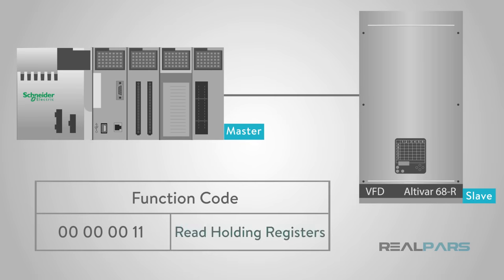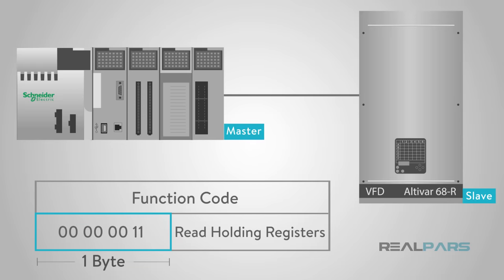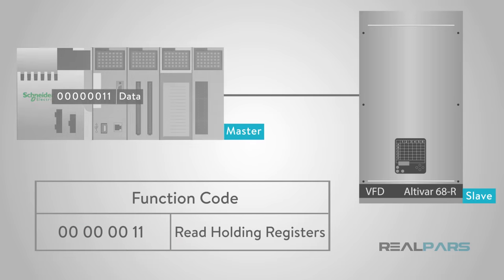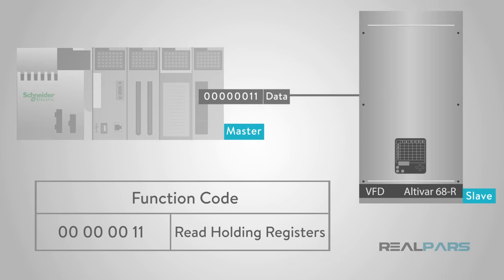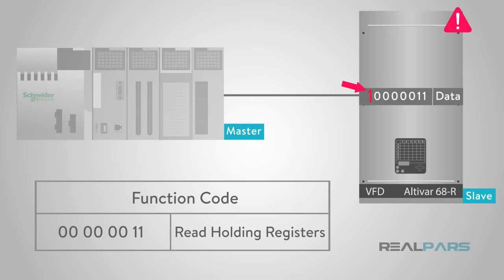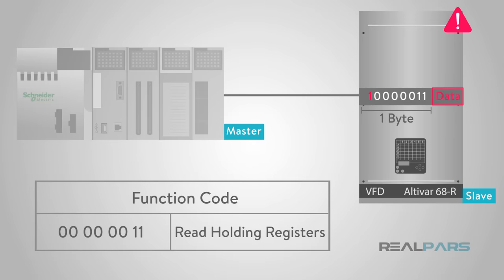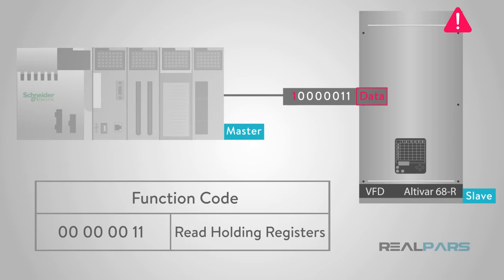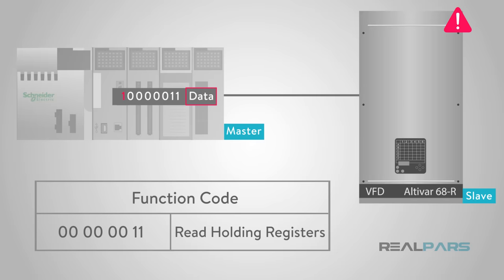For example, the read holding registers command has the function code with one byte containing 8 bits as binary 00000011. If the slave device accepts the request without error, it will return the same code in its response. However, if an error occurs, the slave will return 1 byte containing 8 binary bits 10000011 in the function code field, and appends a unique code in the data field of the response message that tells the master device what kind of error occurred or the reason for the error.